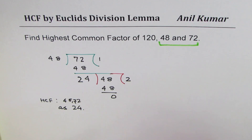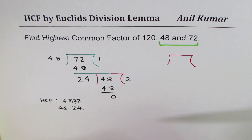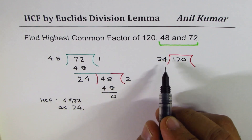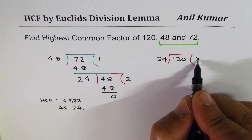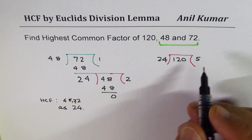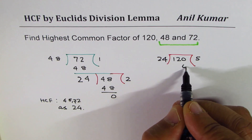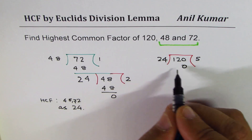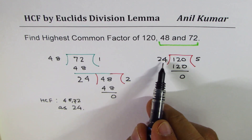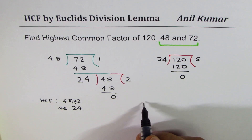We need to find whether 24 is also a common factor of 120. So now let's divide 120 by 24. 24 times 5: 5 times 4 is 20, carry 2, and 5 times 2 is 10 — giving us 120 with a remainder of 0. That means 24 is a factor of 120 as well.